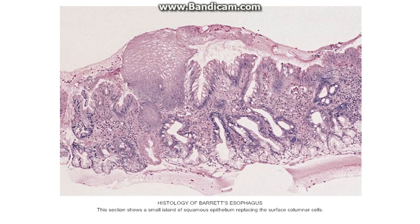In this picture we can appreciate a squamous cell island — this is the only squamous cell island remaining, as the rest has been replaced by columnar epithelium. Here we can also see goblet cells are present.